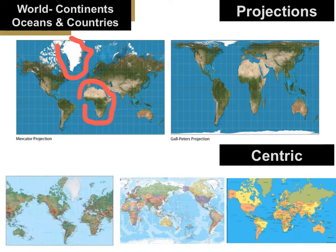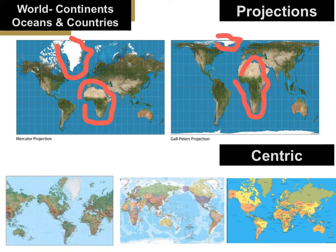Then on the top right you have what's called the Peters projection, or the Gall-Peters projection. Some of the countries and continents look a bit of an odd shape, but the land mass proportions are correct. If we look at Africa and Greenland here, the proportion is exactly correct — you can see that Greenland isn't actually the same size as Africa or even bigger. So there's no perfect way of showing a globe on a flat piece of paper.